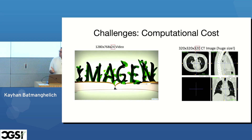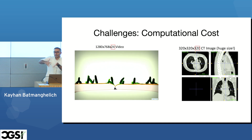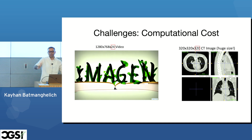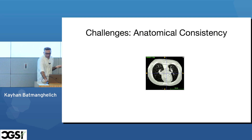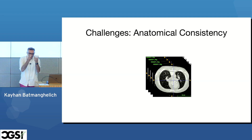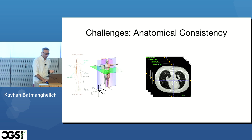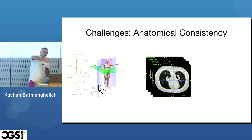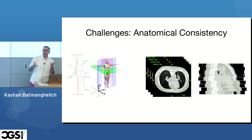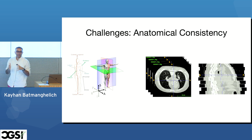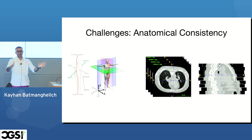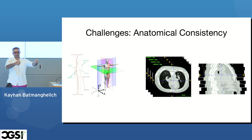One might ask: why not just generate 2D images and concatenate them? If you create 2D images in the axial view and stack them, then look at the result on another axis, you get anatomically inconsistent results — for example, the vertebrae appear completely disjointed. It looks fine axially, but it is not anatomically feasible.